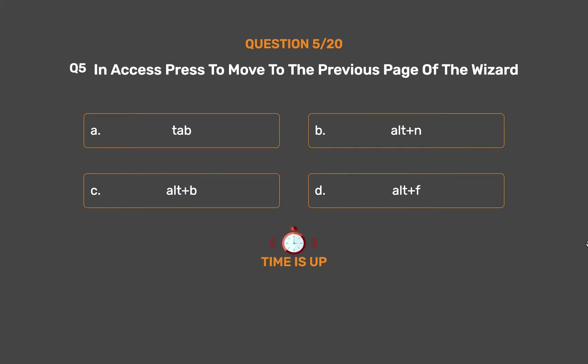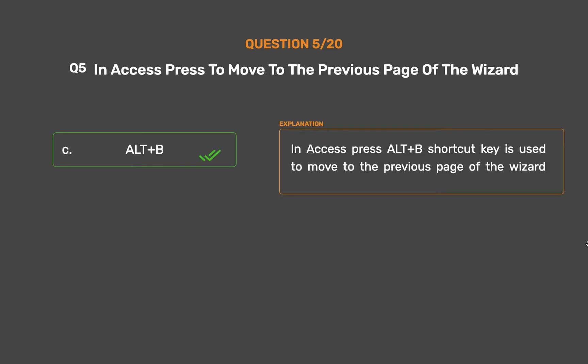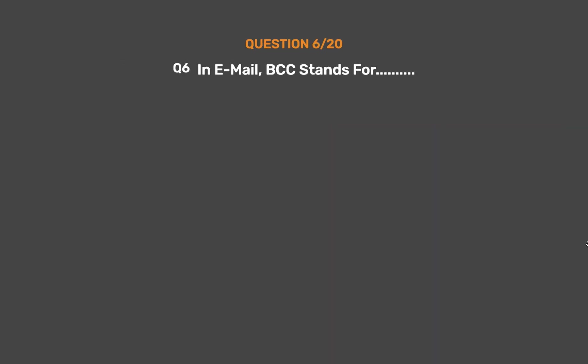The correct answer is Option C: Alt+B. In Access, press Alt+B shortcut keys to move to the previous page of the wizard.